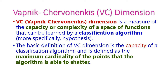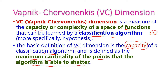The VC dimension is the measure of capacity or the complexity of the space of a function that can be learned by a classification algorithm. The definition of VC dimension is the capacity — we need to compute the capacity of a classification algorithm — which defines the maximum cardinality of the points that the algorithm is able to shatter. This is called the VC dimension.